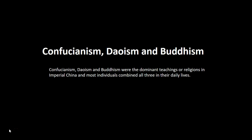Taoism is a religion or philosophical tradition of Chinese origin which emphasizes living in harmony with the Tao, which literally translates into the way. The Tao is a fundamental idea in most Chinese philosophical schools. In Taoism, however, it denotes the principle that is both the source, pattern, and substance of everything that exists. Taoism differs from Confucianism by not emphasizing rigid rituals and social order. Taoist ethics generally tend to emphasize wu wei, which translates to effortless action, naturalness, simplicity, spontaneity, and the three treasures: compassion, frugality, and humility.